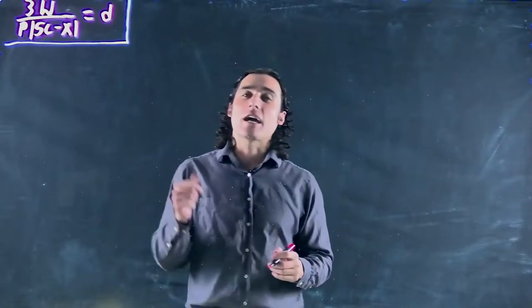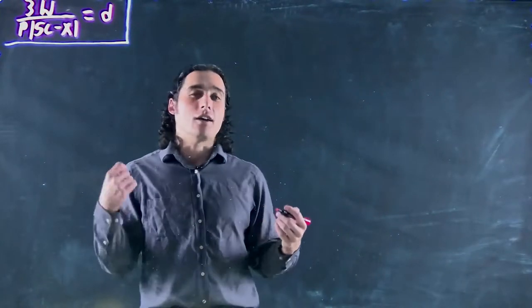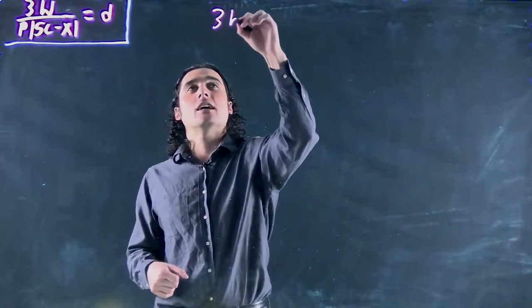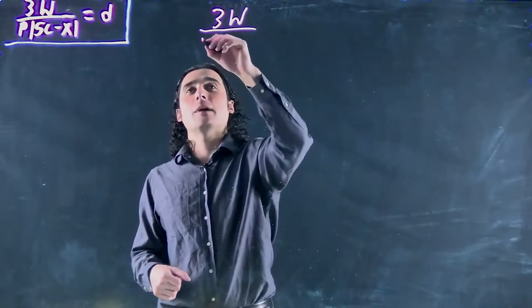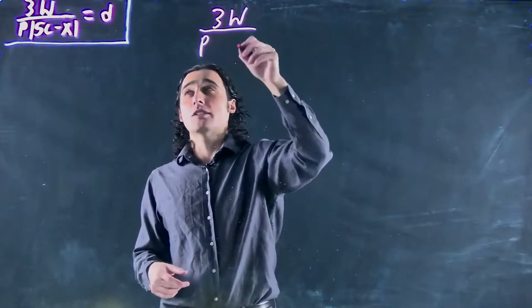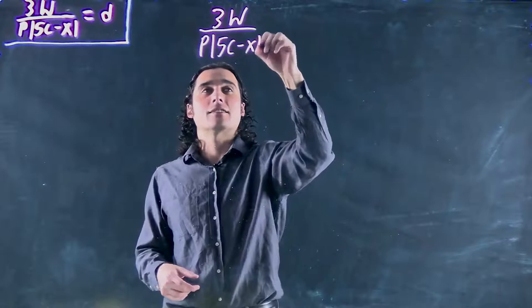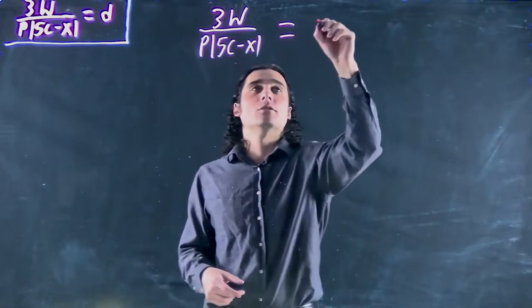Hello again. We've got another absolute value, and this time we've got a lot of variables we're working with. So we have 3w, which is being divided by p, which is multiplying the absolute value of 5c minus x. And that whole side is equal to d.